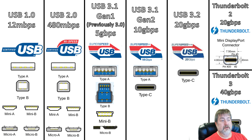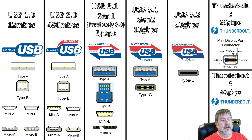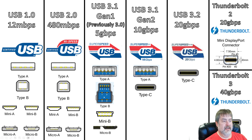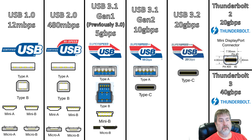Then we go up to USB 3.1, and that's really where the game changes. RME's highest-end interface is USB 3.1. The Type B connector changes — it's a different, wide, fat-looking connector. You've got five gigabits per second out of that, which is way more than audio needs.